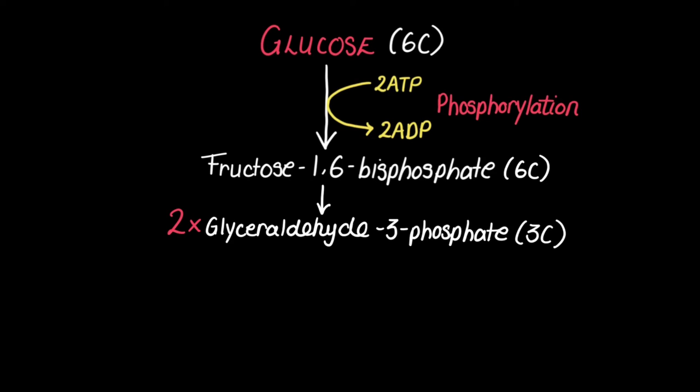Each of these glyceraldehyde 3-phosphates is then converted into pyruvate, therefore you get two pyruvate molecules because each of the pyruvates also has three carbons.